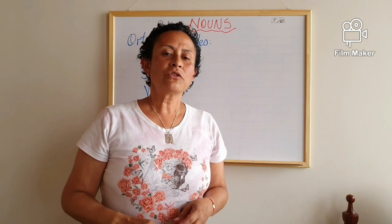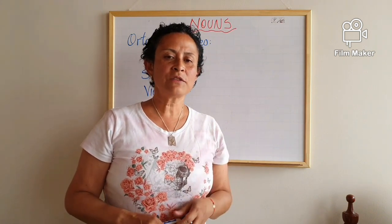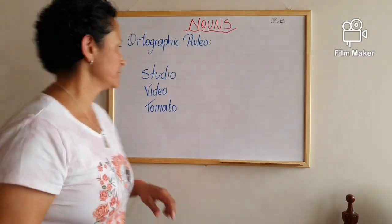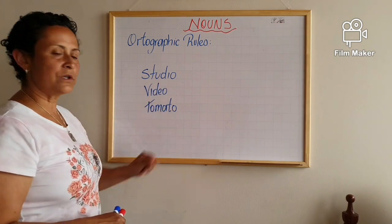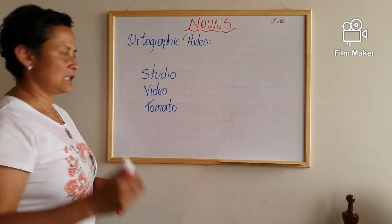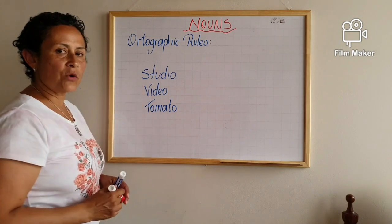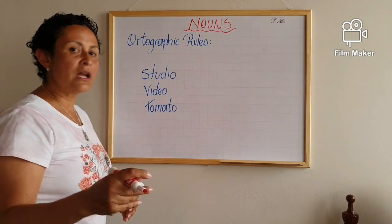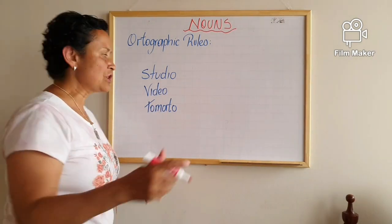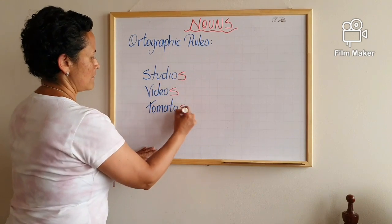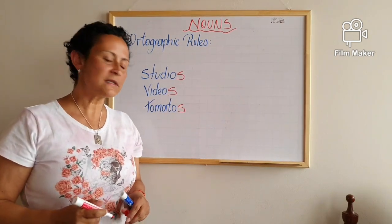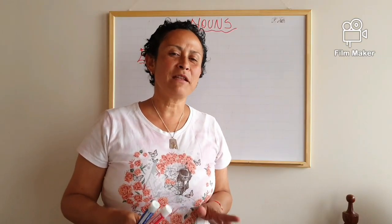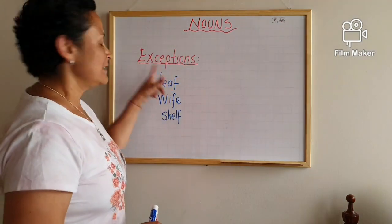Orthographic rule number three is when nouns end in O. In many cases you simply add S. For example: studio becomes studios, video becomes videos — very simple, similar to the Spanish language. However, tomato becomes tomatoes, and there are some exceptions. These nouns in singular form have special plural forms, and the only solution is to memorize them.